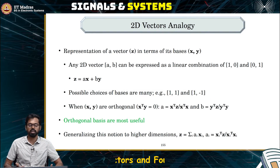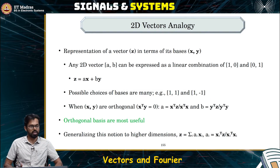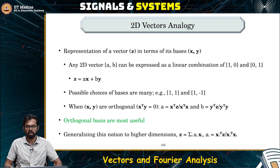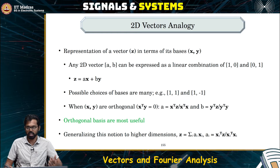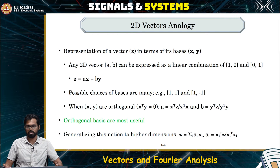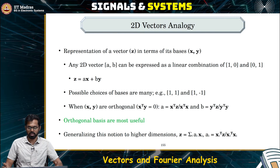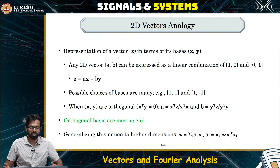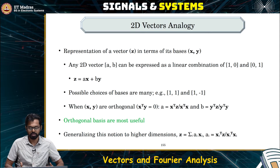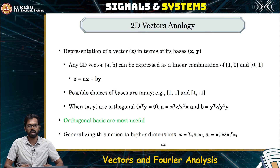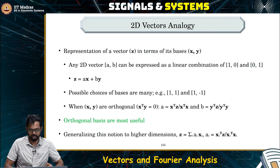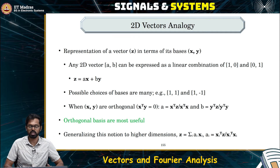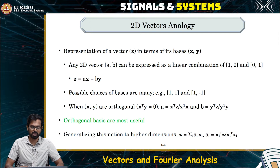Given infinitely many phasors, we know how to construct them — it is just e to the power j omega t, change the value of omega and you can get infinitely many phasors. But how do you get the coefficients? If somebody gives you a signal, how do you decompose that in terms of the eigenfunction and get the coefficients?